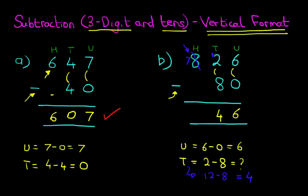And lastly, we have the hundreds column. In the hundreds column, we've got 7. It's not 8. We crossed out 8. It is now 7 minus 0, so that remains 7. So therefore, 826 subtract 80 equals 746. So that is how we do subtraction of a three-digit number and tens using the vertical format.